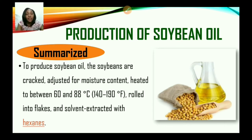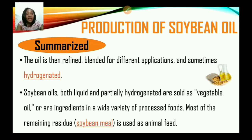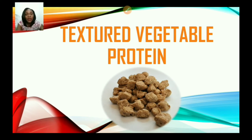To produce soybean oil, the soybeans are cracked, adjusted for moisture content, heated, rolled into flakes, and solvent extracted with hexane. The oil is then refined, blended for different applications and sometimes hydrogenated. Soybean oils — both liquid and partially hydrogenated — are sold as vegetable oil or are ingredients in a wide variety of processed foods. Most of the remaining residue, which is the soybean meal, is used to create animal feed.